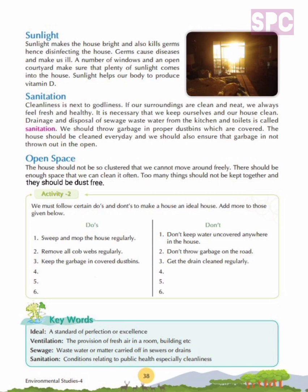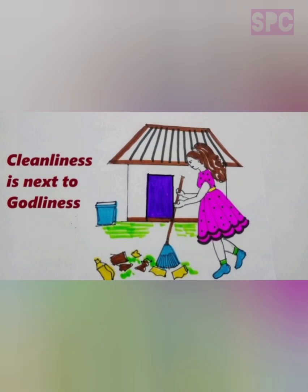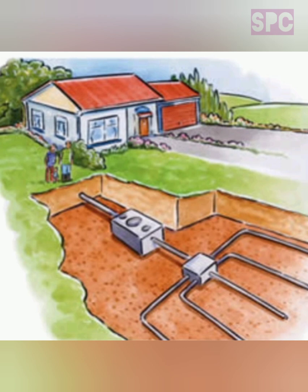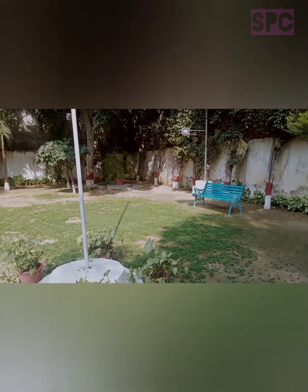Let's move on to the next feature of an ideal house: sanitation. Cleanliness is next to godliness. If our surroundings are clean and neat, we always feel fresh and healthy. It is necessary that we keep ourselves and our house clean. Drainage and disposal of sewage water from the kitchen and toilets is called sanitation. We should throw garbage in proper covered dustbins. The house should be cleaned every day and we should ensure that garbage is not thrown out in the open. Sanitation means keeping our surroundings clean and germ-free. It can be achieved by sweeping and mopping the house regularly, throwing garbage in covered dustbins only, and proper disposal of sewage wastewater from the kitchen and toilets.